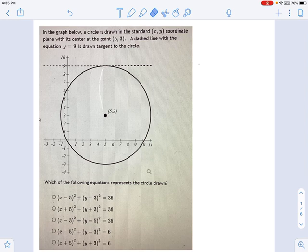And to be clear about it, they're saying this. See this distance right here? They're saying, hey, we've got this line, y equals 9 right here. And that is tangent to the circle.